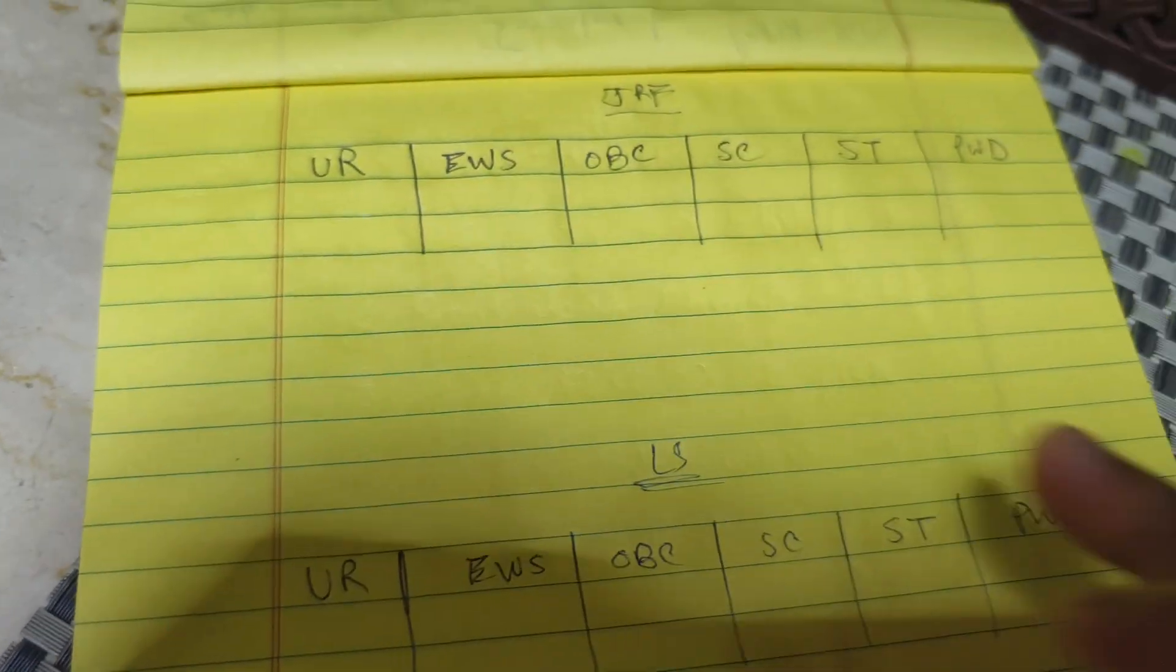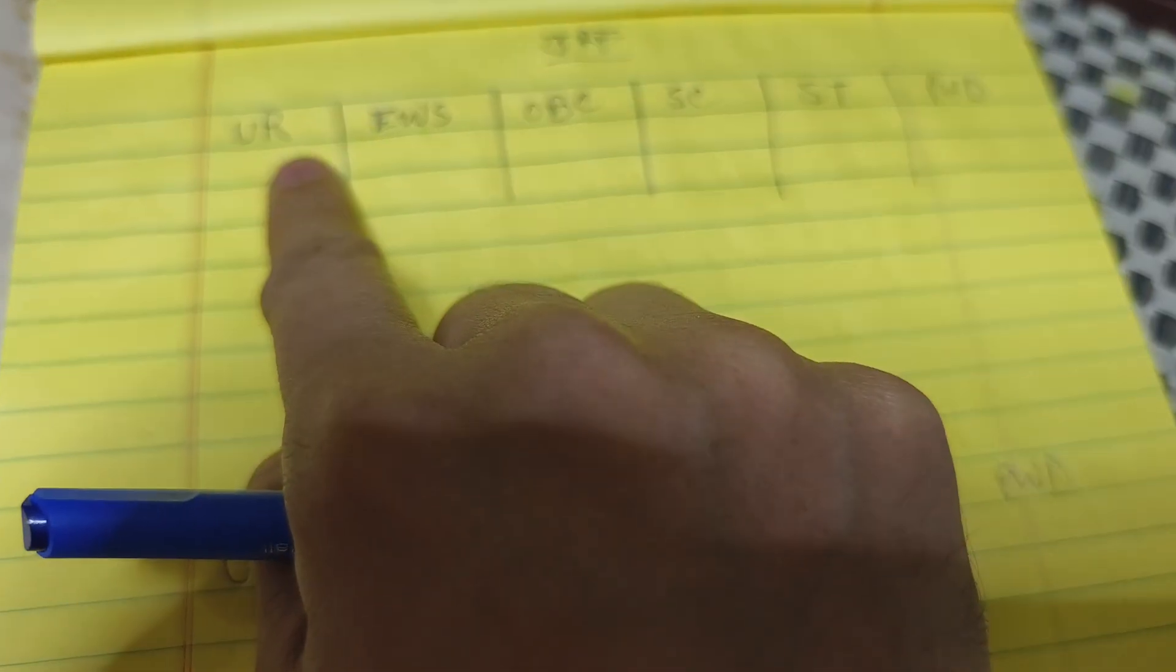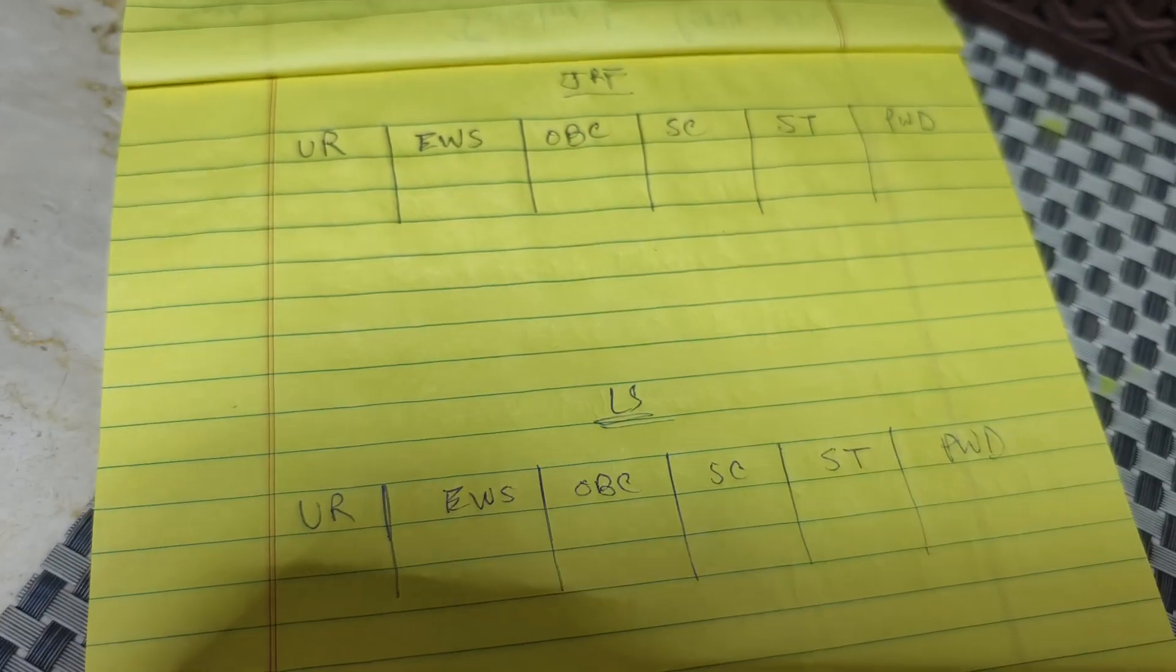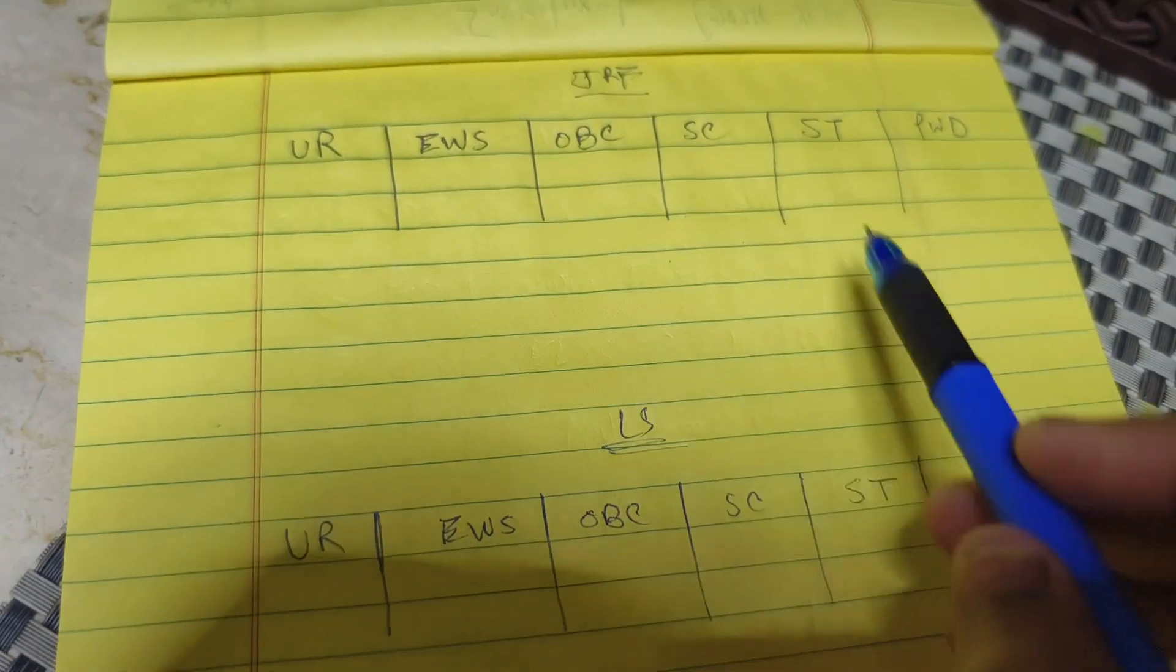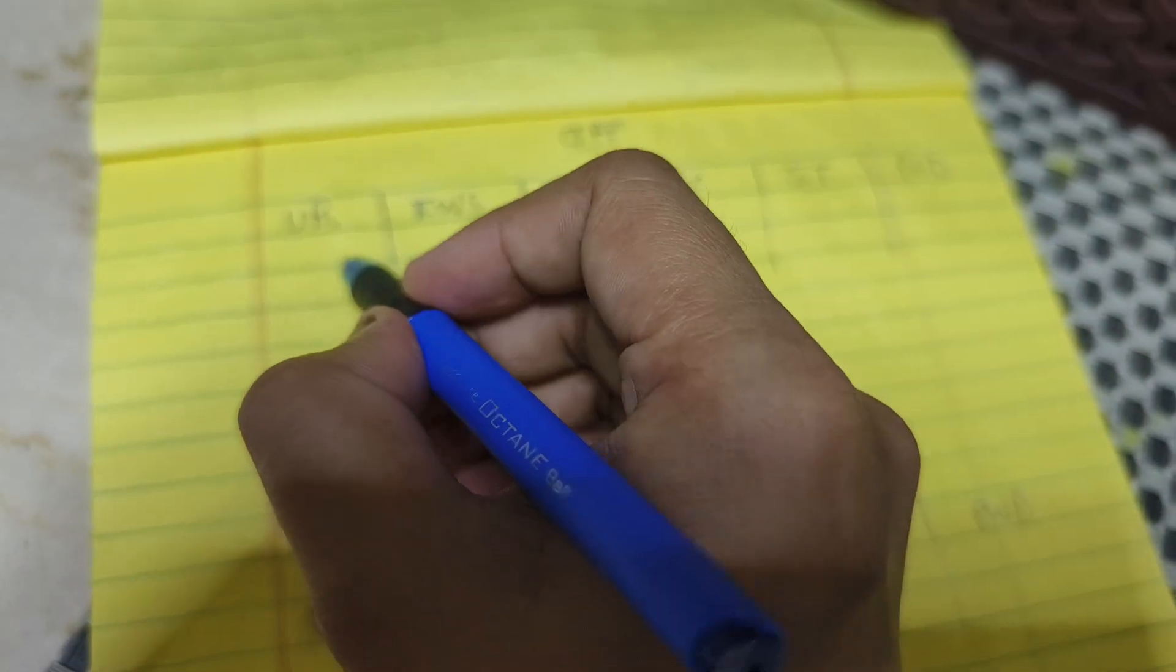For both unreserved means general category, EWS, OBC, SC, ST and PWD. So let's first talk about marks for unreserved category.